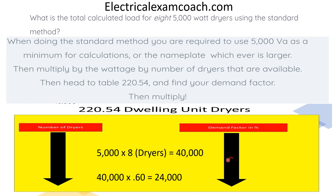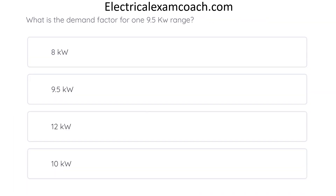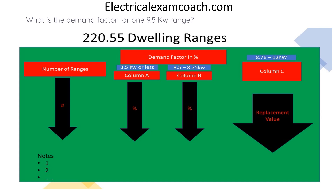I am the Electrical Code Coach, and you can head to electricalexamcoach.com to learn about more topics like these. What is the demand factor for one 9.5 kW range? The correct answer is 8 kW. To find this, we head to Table 220.55. The first question we always ask is: what column does our range fall in? Ours is a 9.5 kW range, so it falls into Column C. We start on the left-hand side of the table, find our number of ranges — which is 1 — and tee off with the Column C value, which is 8 kW. We have to remember that Column C is not a demand factor, but rather a replacement value.